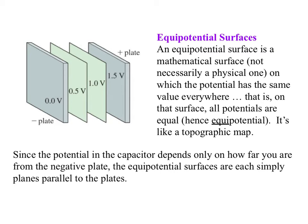Since the potential in the capacitor depends only on how far you are from the negative plate, remember that it was just X over D times the total potential difference, then the equipotential surfaces are each simply planes parallel to the plates. In other words, it doesn't matter if you think of an X, Y, Z axis where we have something like this. This is X, this is Y, and this is Z. Your values of Y and Z don't matter. Only the values of X matter. So everybody on this sheet, no matter what coordinate X, Y, and Z they have, they all have the 0.5 volts. And everybody on this sheet has 1 volt, and so on.